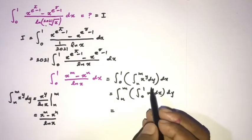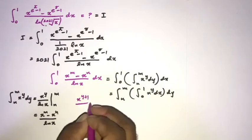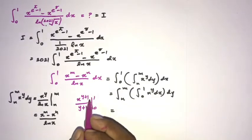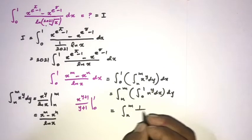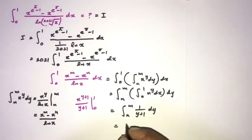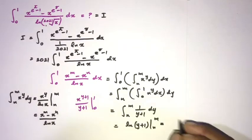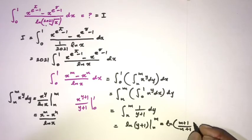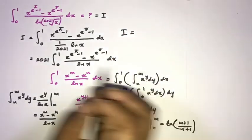The integral of x to the y with respect to x, by the general power rule, is x to the (y+1) over (y+1), evaluated from 0 to 1. Applying the limits gives us 1 over (y+1). So we have the integral from n to m of 1 over (y+1) dy, which equals natural log of (y+1) evaluated from n to m, giving natural log of (m+1) over (n+1).